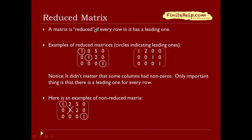A matrix is reduced if every row in it has a leading 1. For example, row 1 has a leading 1, row 2 has a leading 1, and row 3 has a leading 1. I want to emphasize that a matrix is reduced if every row has a leading 1 — so the third column doesn't actually need to have a leading 1. Some students make the mistake of checking if each column has a leading 1, and that's not correct.